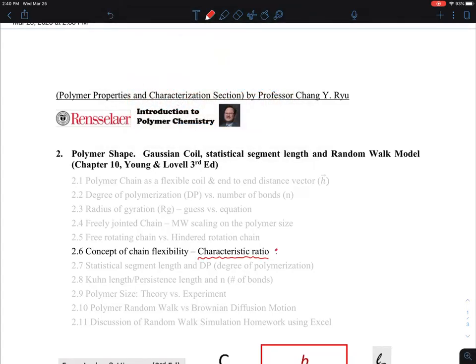The characteristic ratio is C∞, and that's a symbol. You might recall that end-to-end distance squared, the average value, is essentially N times L² for flexible chain, and about 2 times NL² for freely rotating chain, and 3 times NL² for hindered rotation.